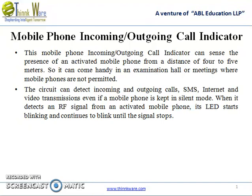The circuit can detect incoming and outgoing calls, SMS, internet and video transmissions even if a mobile is kept in silent mode. When it detects an RF signal from an activated mobile phone, its LED starts blinking and continues to blink until the signal stops.